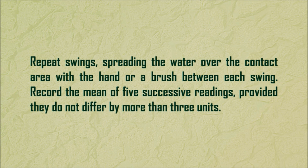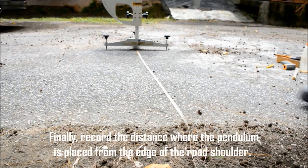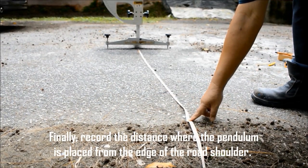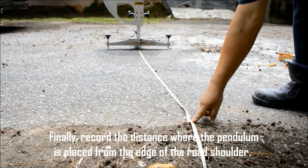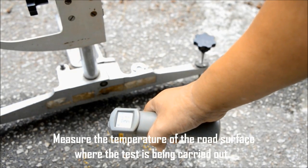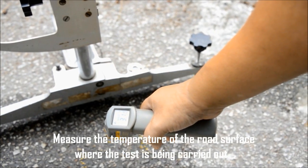Repeat swings, spreading the water over the contact area with the hand or a brush between each swing. Record the mean of 5 successive readings, provided they do not differ by more than 3 units. Finally, record the distance where the pendulum is placed from the edge of the road shoulder. Measure the temperature of the road surface where the test is being carried out.